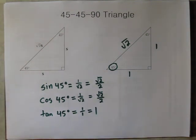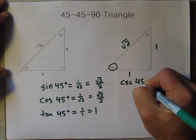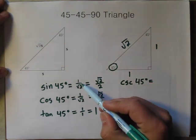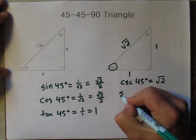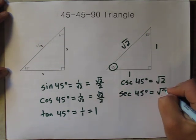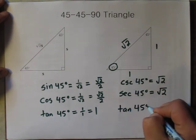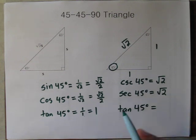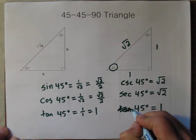Knowing that the other trigonometric functions are simply reciprocals of these three, we can evaluate them fairly quickly. Cosecant of 45 degrees is 1 over √2 flipped over, which just ends up being √2. Secant of 45 degrees is also √2. And cotangent of 45 degrees — the reciprocal of 1 — is just 1.